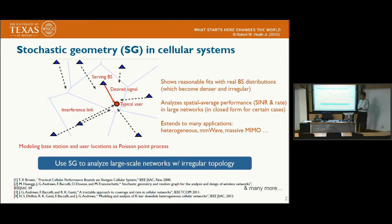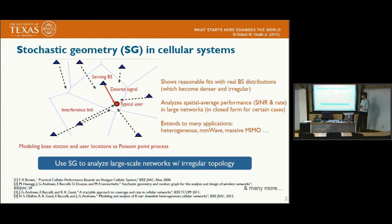The tool we use here is called stochastic geometry. The basic idea is to model the distribution of base stations and users as a point process, and using stochastic geometry, we can derive the SINR and rate distribution in closed form. Using the closed-form expression, we can obtain key performance insights of cellular networks — for example, the scaling law between different key parameters, as I will discuss later.